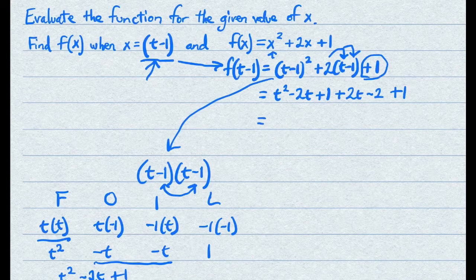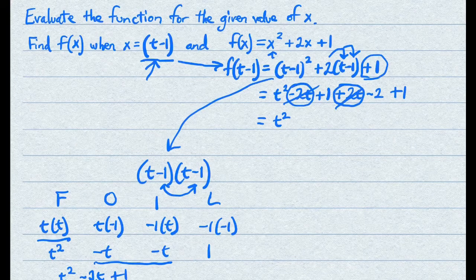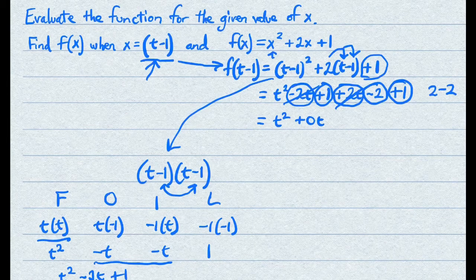Now combine like terms. There's only one squared term, so t squared comes down. Negative 2t and positive 2t cancel each other out — they're gone. For the constant terms, 1 minus 2 plus 1 also equals 0. So your answer before simplifying is t squared plus 0t plus 0, and the simplified answer is just t squared.